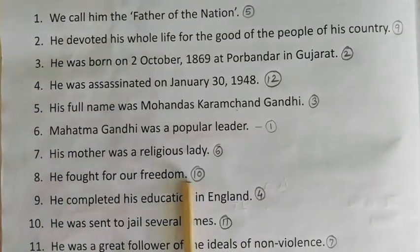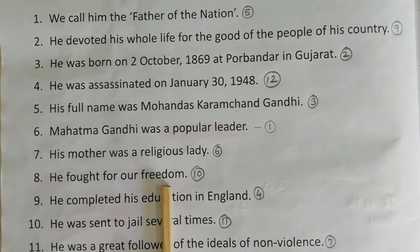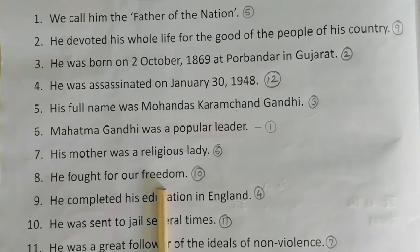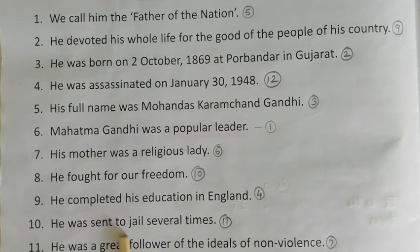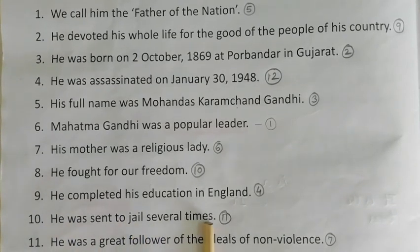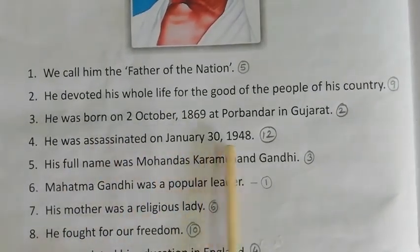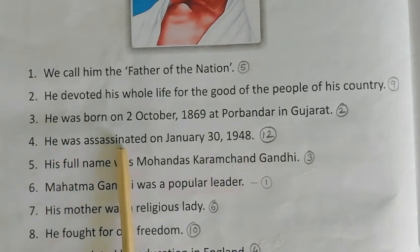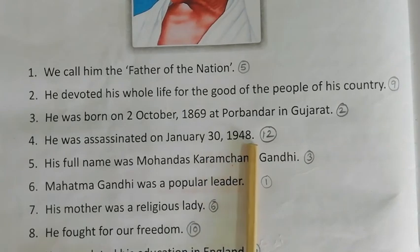The tenth sentence is: 'He fought for our freedom and independence.' He was sent to jail several times. He was assassinated on January 30, 1948. 'Assassinated' means when was his death — January 30, 1948.